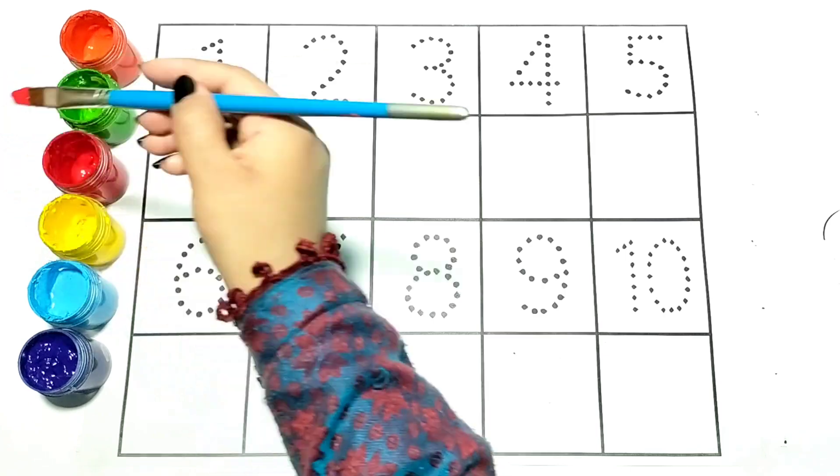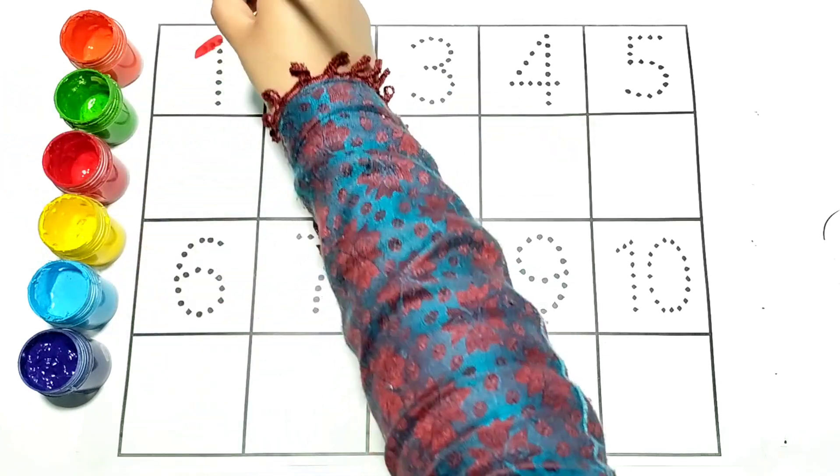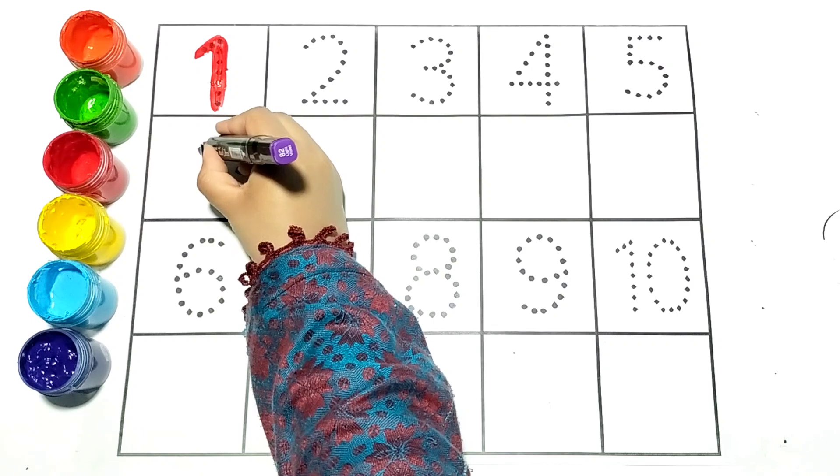Let's write the numbers with colors. Orange, one.